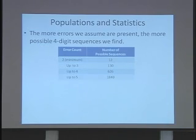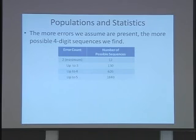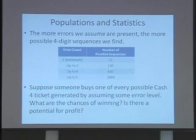Obviously, the more errors we assume are present, the more possible four-digit sequences we find. If we assume the two errors we know have to be there, there are 12 possible four-digit sequences. That grows fairly rapidly: with three errors there could be 130 sequences, with four errors there could be 626, and so forth. Now, what if somebody goes out and buys...